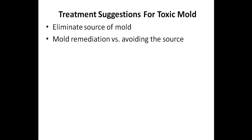If remediation isn't an option, or if you choose to remediate first and it doesn't help with the mold toxicity, then the next step is to avoid the source. At times, this can seem like an extreme measure to take, as it might involve moving to a different home, quitting your job, or attending a different school. But if remediation doesn't provide a solution to the mold toxicity problem, then the best option is to do whatever is necessary to completely avoid the source.